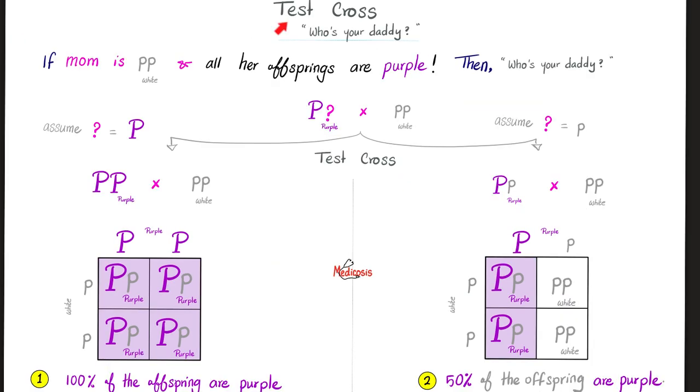Next, test cross, aka, who's your daddy? Suppose that your mom is small p, small p, white. This is a cougar pea plant. And all of her offsprings are purple. All of them are cookie monsters. The question is, who's your daddy? Can we tell?